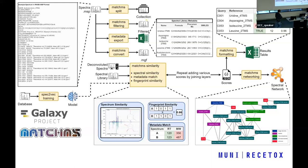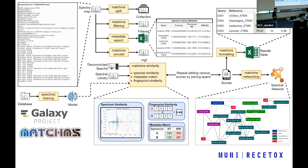You can also do molecular networking: take your scores matrix and put it into a network where the connection between nodes is determined by the spectral similarity score. You can download this and take it into software dedicated for this, such as Cytoscape or Matjam. We also implemented a wrapper for machine learning based scoring. You can format the output results, et cetera.